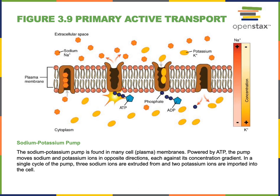A primary active transport mechanism is where one protein uses ATP in order to pump a solute across the plasma membrane. The example we see here is the sodium-potassium pump, which will force sodium out of the cytosol and force potassium into the cytosol.